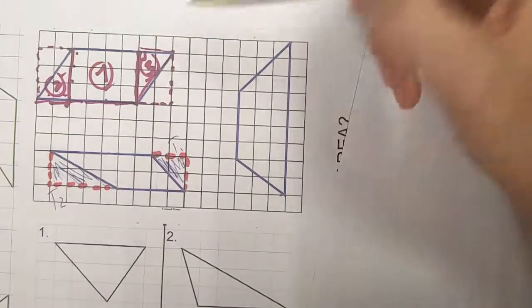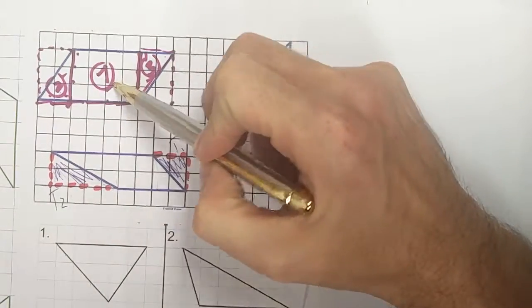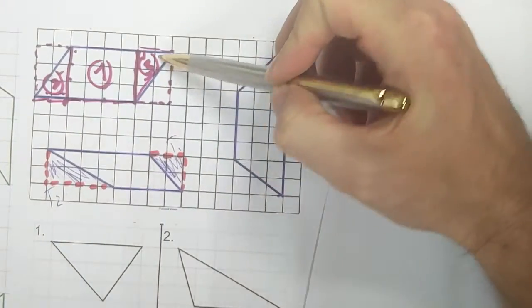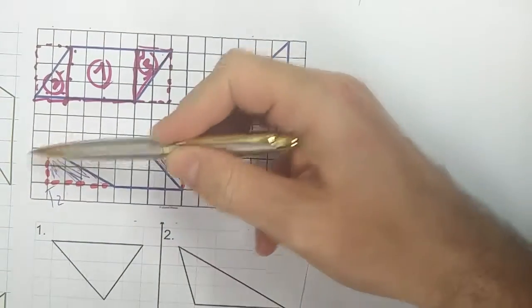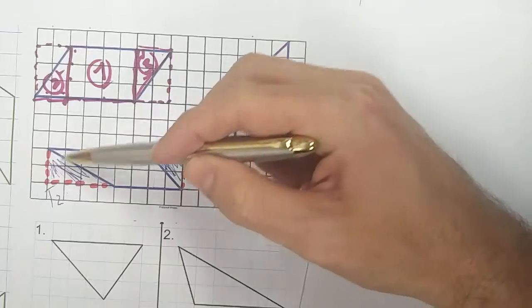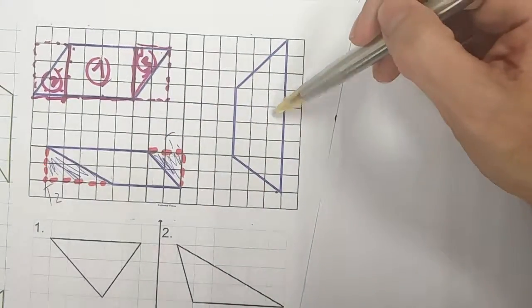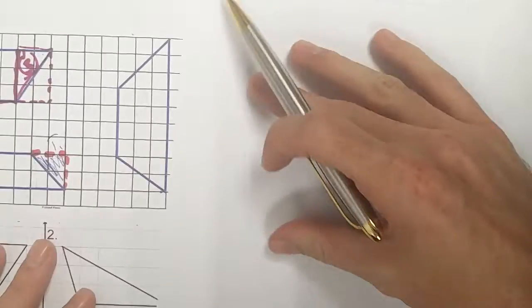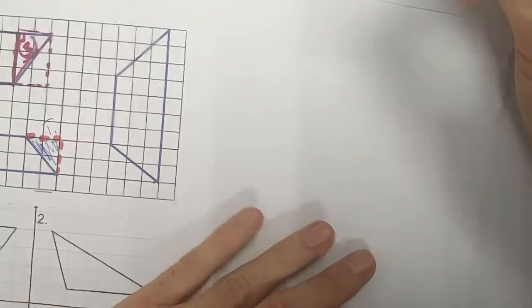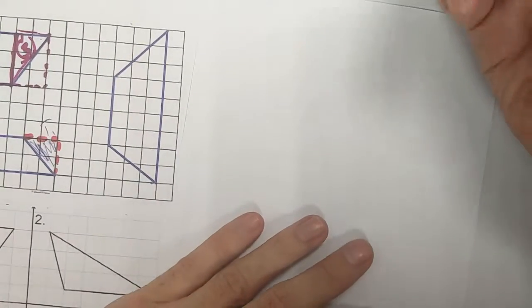All right, here we go. Last one. So remember the first one, we just added the three together to find the total area. The second one, we found the area of the big thing and took these two away. And when we do this last one here, we're just going to do both of them real quick. So what I can do, let's just start with the additive.